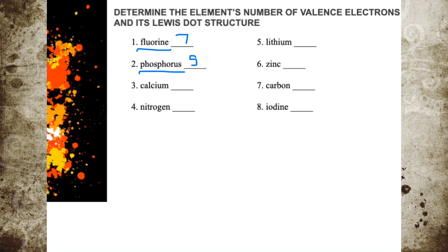Calcium is in group 2A, therefore you will have two valence electrons. Nitrogen is in group 5A, therefore nitrogen will also have five valence electrons. Lithium is in group 1A, therefore it will have one valence electron.